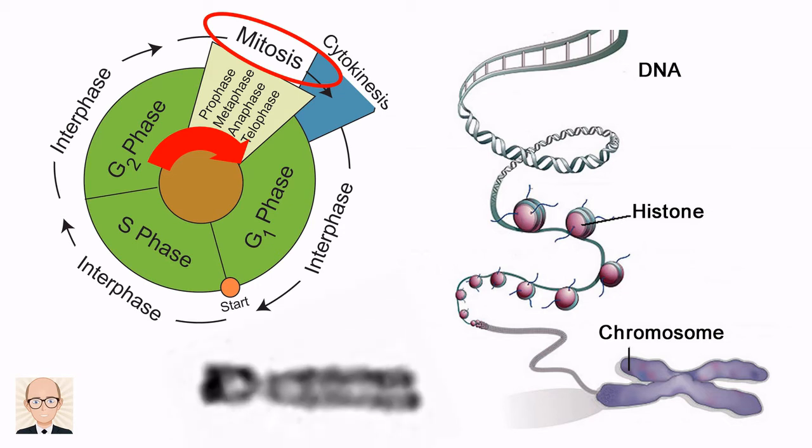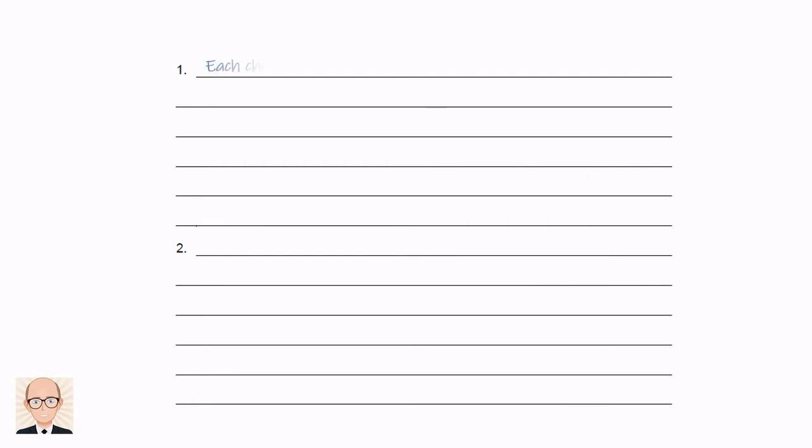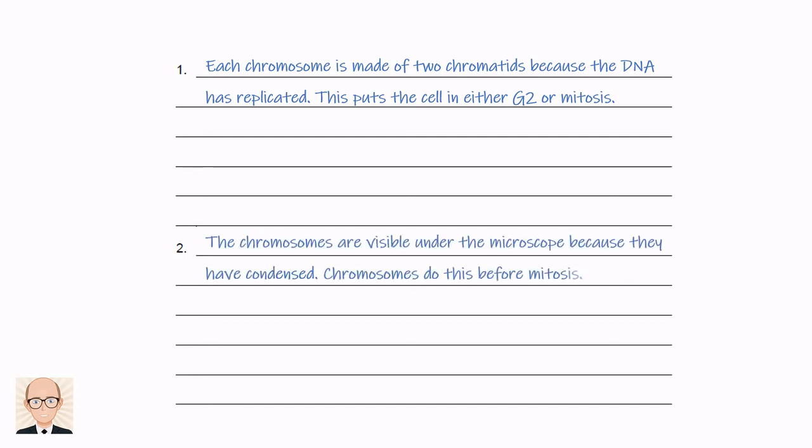So we have our evidence, we just need to write it down. So we write something like: Each chromosome is made of two chromatids because the DNA has replicated. This puts the cell in either G2 or mitosis. The chromosomes are visible under the microscope because they have condensed. Chromosomes do this just before mitosis.